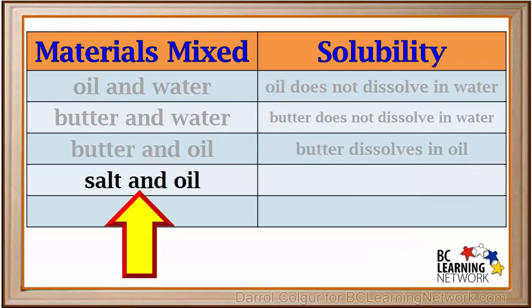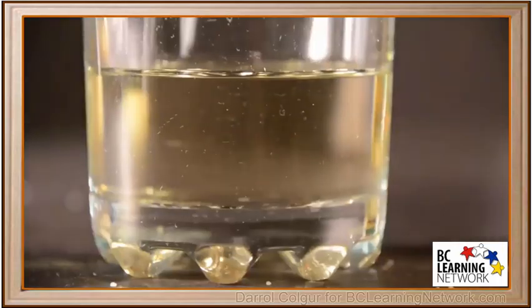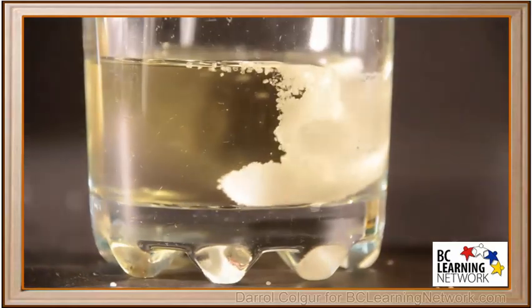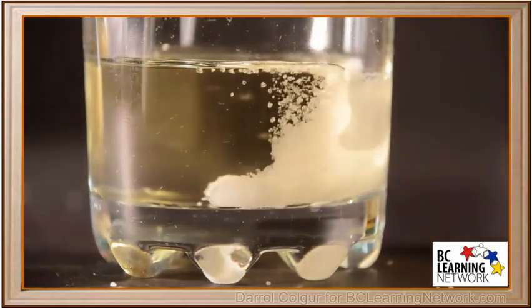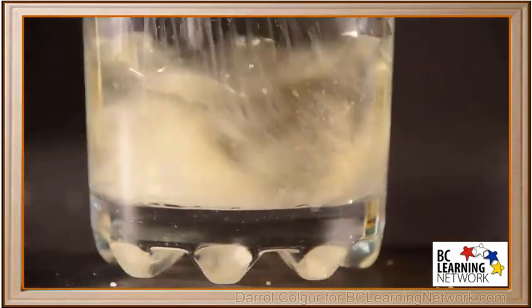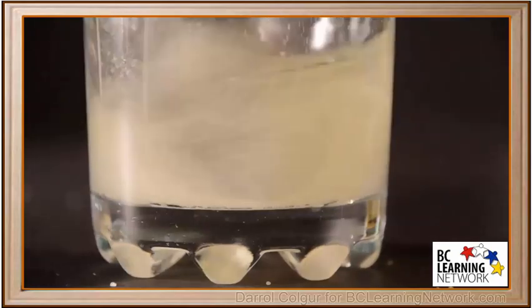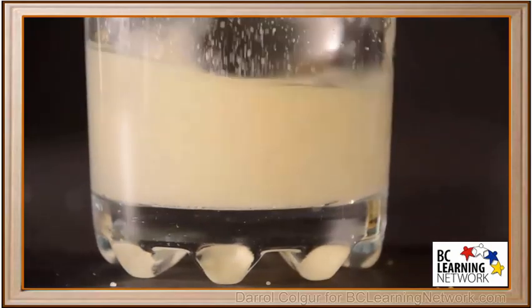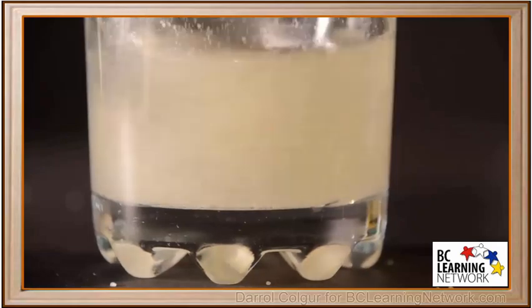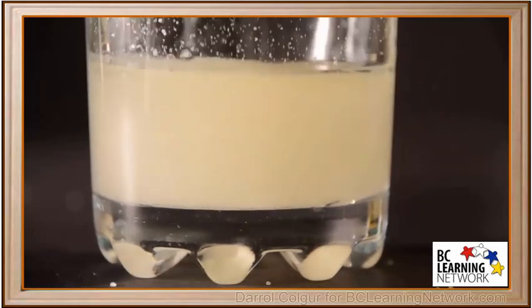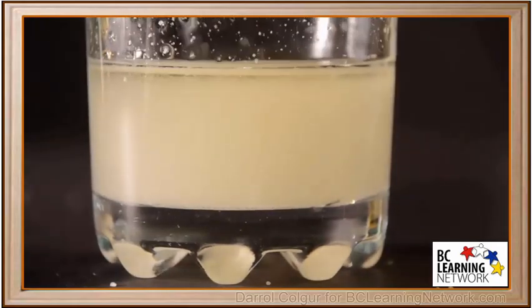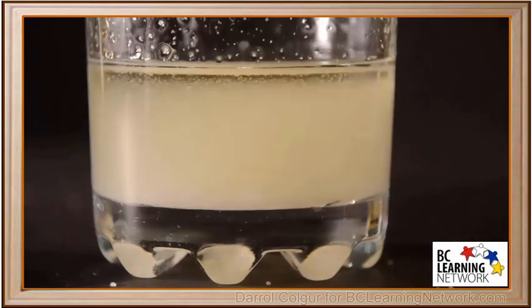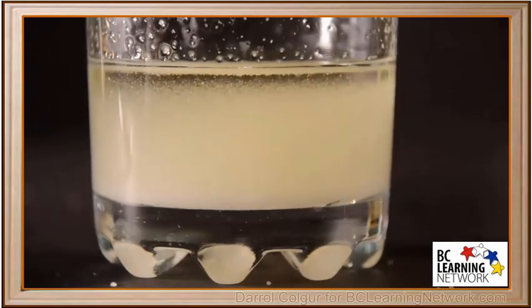Now we'll add some table salt to oil and see what happens. Can you make a prediction? We'll use some sea salt and add a teaspoon of it to oil and give it a good stir. Notice that the crystals of salt tend to sink to the bottom of the glass.